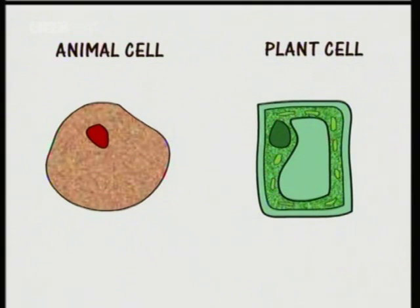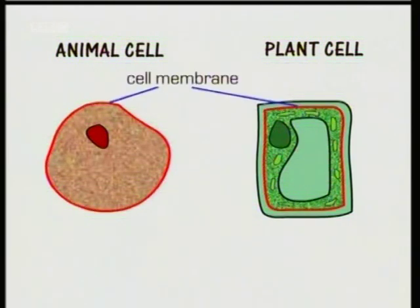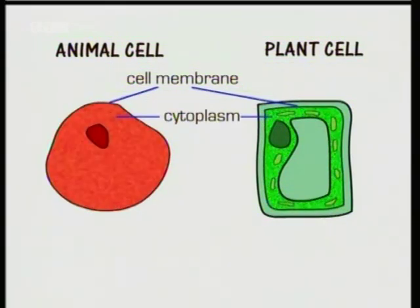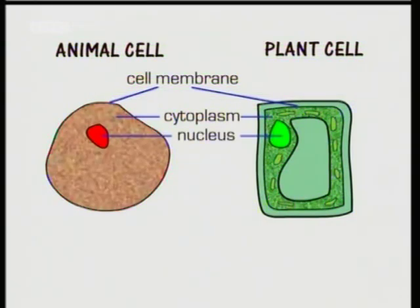Here's a diagram of an animal cell and a plant cell. Both cells have the same basic features. They both have a cell membrane, which is a very thin, partially permeable outer layer of proteins and fats — it holds the cell together and controls what goes in and out of it. Cytoplasm is the contents of the cell, where many of the chemical processes take place. The nucleus contains chromosomes, which carry genes that act as a set of instructions for the cell.